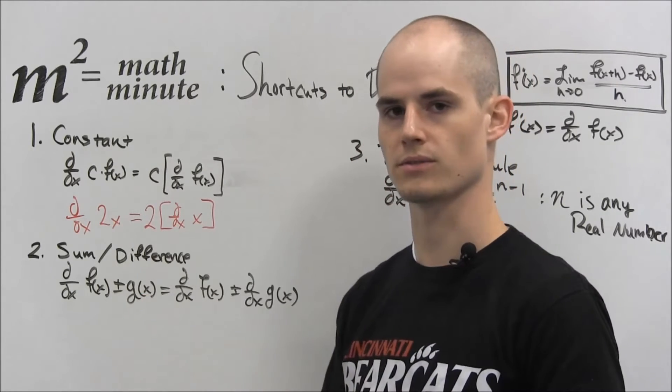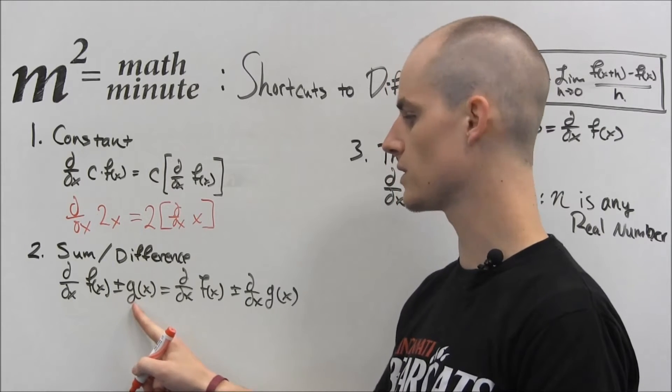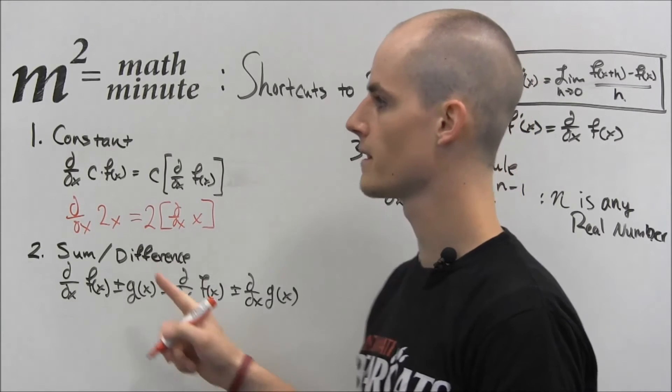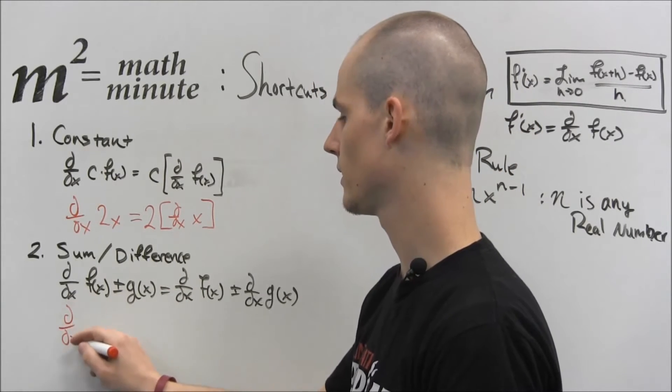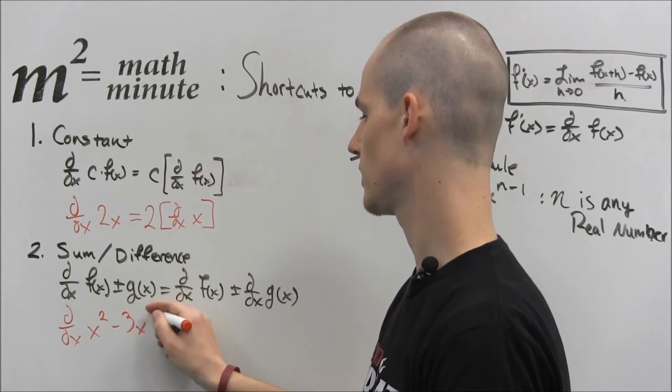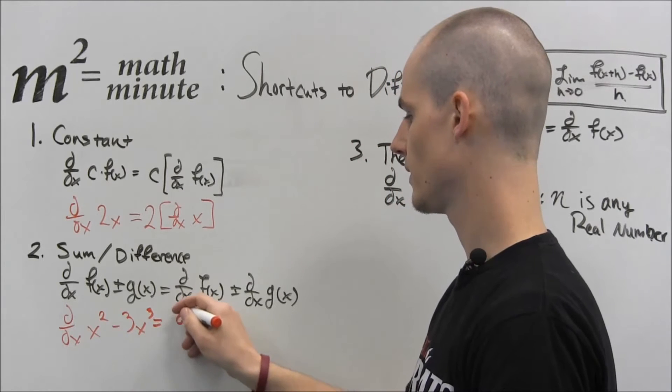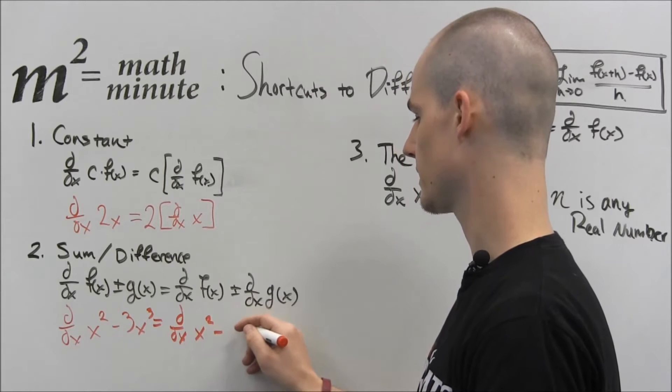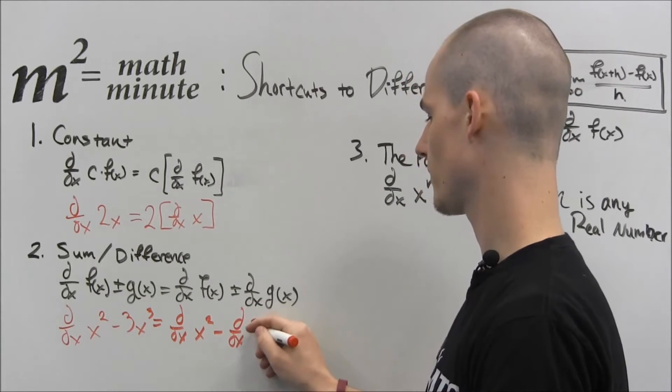So now the sum difference rule, very similar to limit laws again. If you have the derivative of 2 functions added or subtracted, we can split them up into 2 separate derivatives. So for this one, let's do something like the derivative of x squared minus 3x cubed. As you can imagine, we can split this up. The derivative of x squared minus the derivative of 3x cubed.